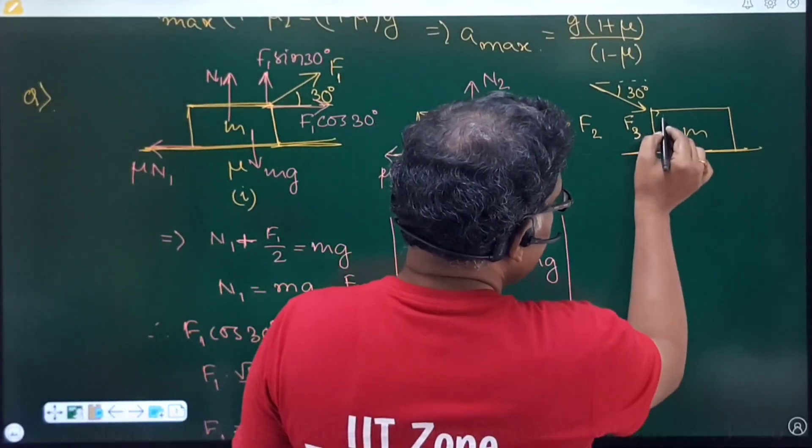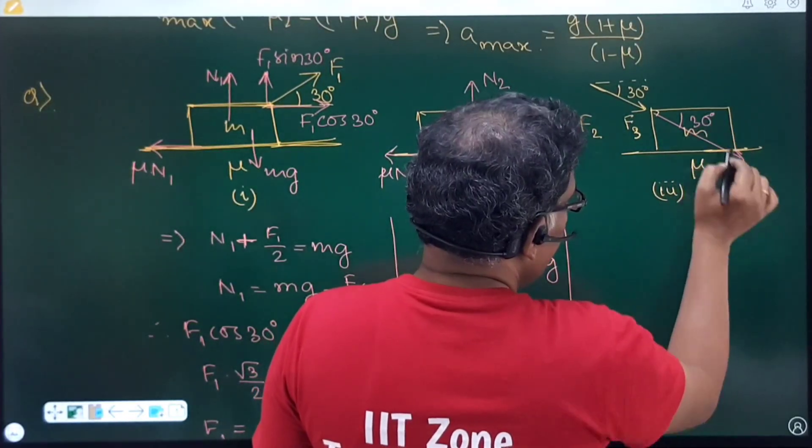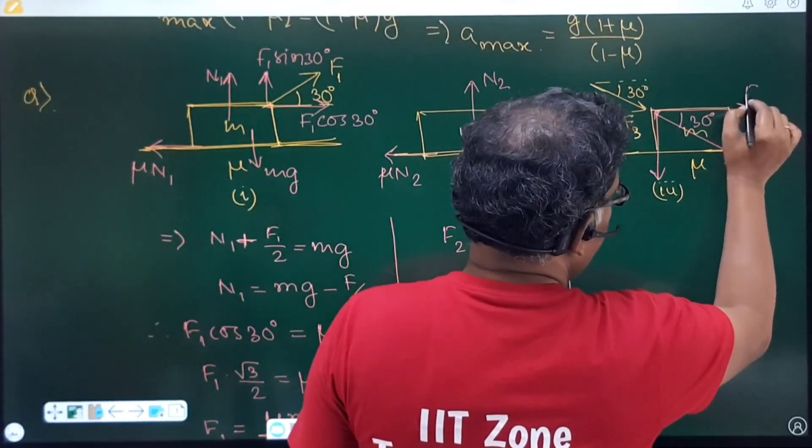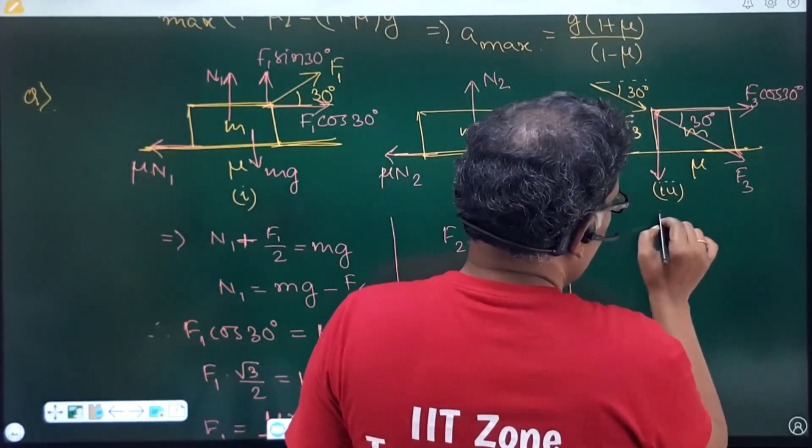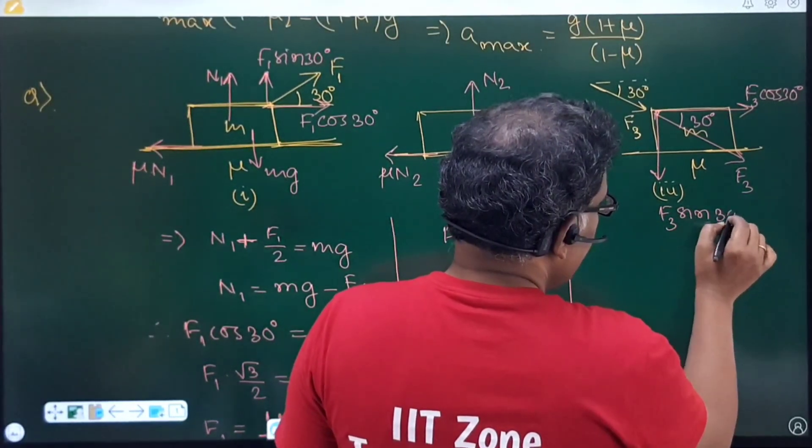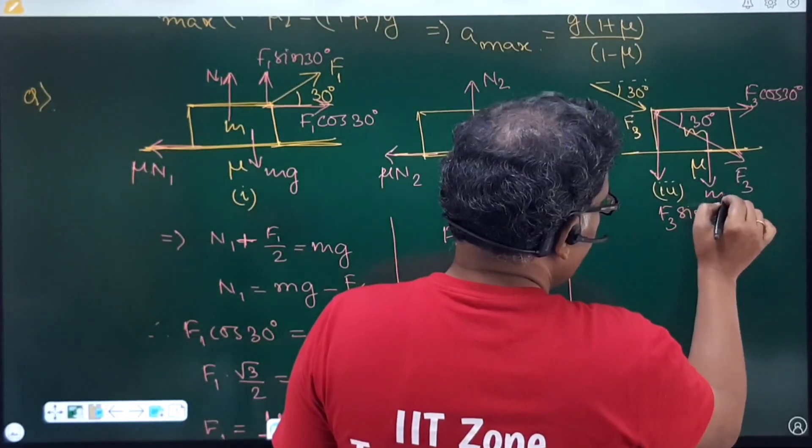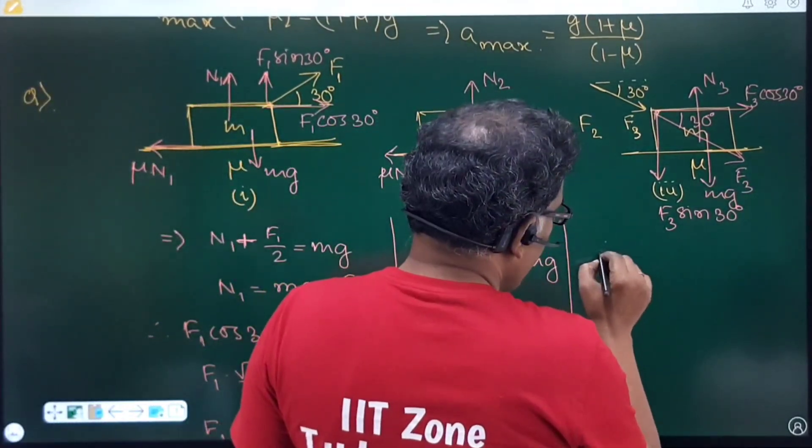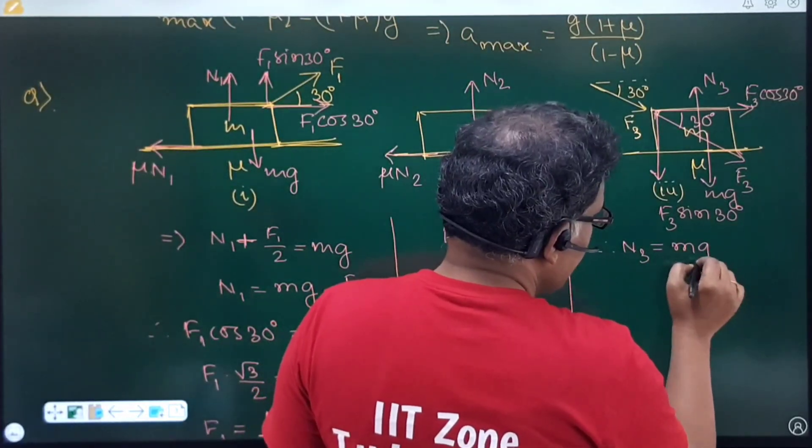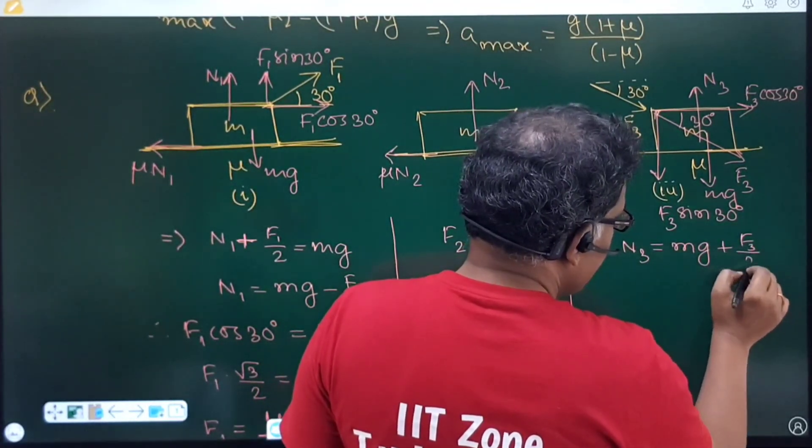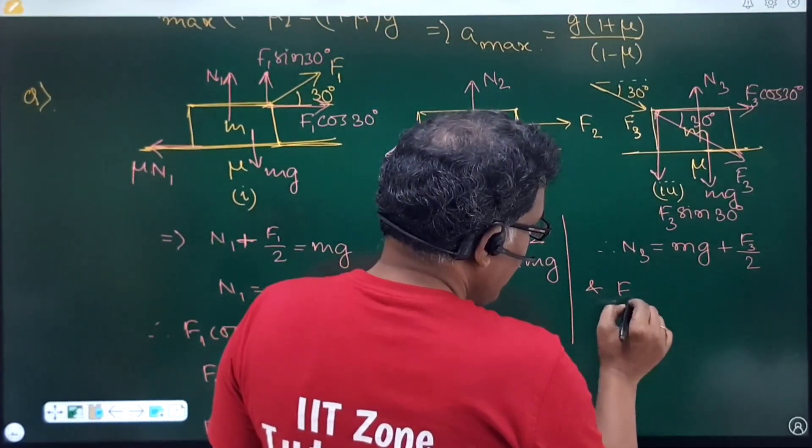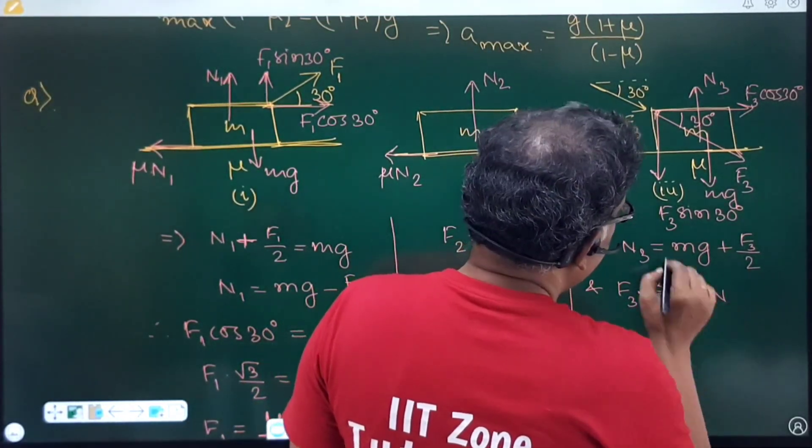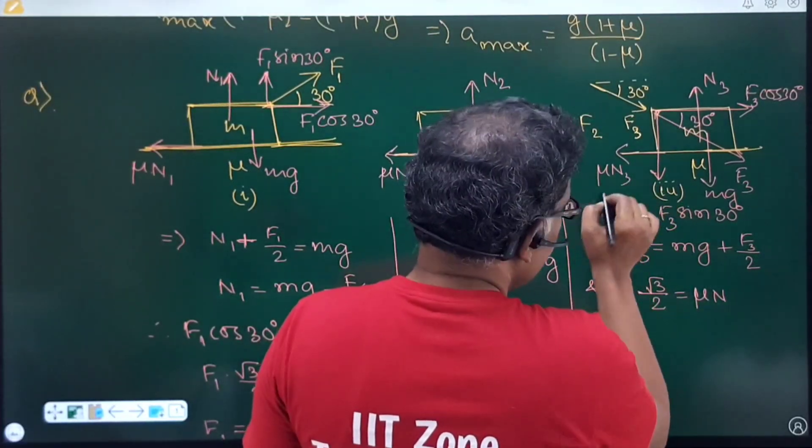Similarly, in third case, third case applied force is obliquely downward at 30 degree, that is F3. Here I can resolve F3 bringing horizontal and vertical. Horizontal effect is F3 cos 30 and vertically downward will be F3 sin 30. So, that will be added with the Mg of the block. So, that this time N3 is this.